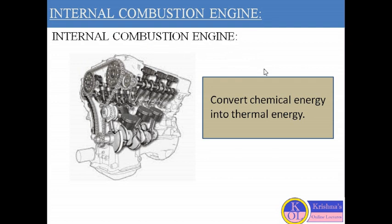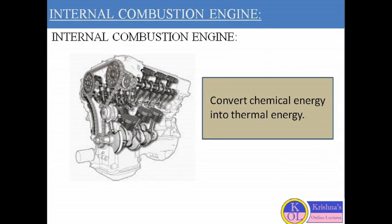The examples of internal combustion engines are all types of automobiles — bikes, cars, buses, trucks, railway engines, locomotives, etc. All are types of internal combustion engines where the combustion takes place inside the cylinder or inside the engine. The gas turbine power plant is an example of an external combustion engine, where the combustion of fuel and air takes place in an external furnace and the generated heat is transferred to the gas used in the turbine.